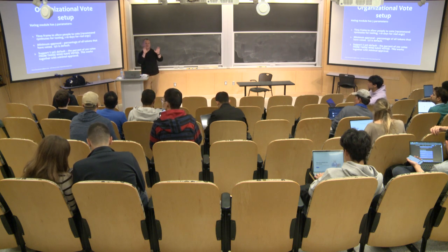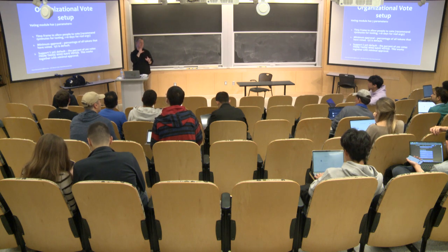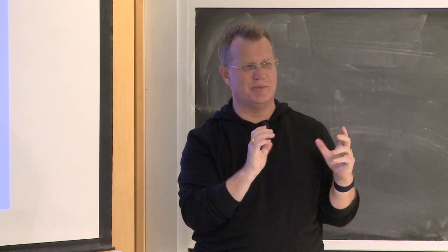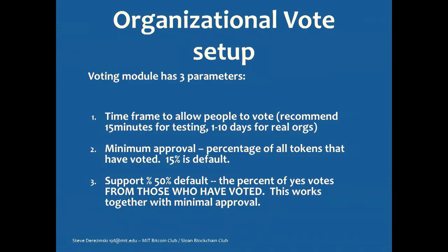There's a voting module, which is the most complex part of this whole process. There are three factors you have to select. First: if somebody puts up something for a vote, what's the time frame to allow people to weigh in? Is it going to be a day, 15 minutes, 10 days? If it's a major transaction, give it a lot of time. Unfortunately you select that parameter once when creating the organization. Second: the minimum approval percentage of all the tokens that have voted. The wallets in your organization will have tokens — and it's a token-weighted vote.